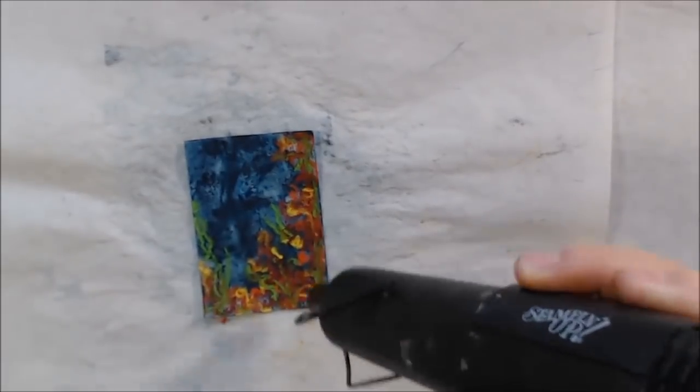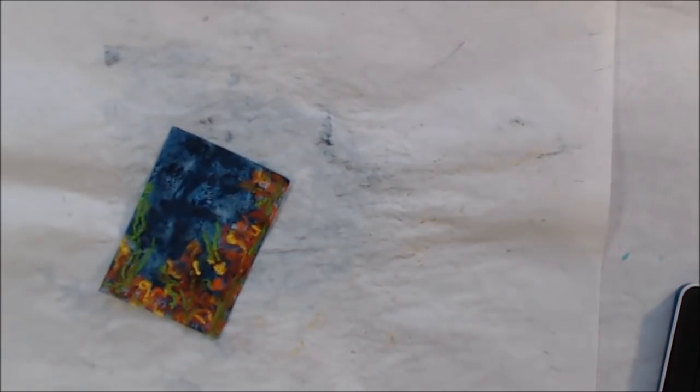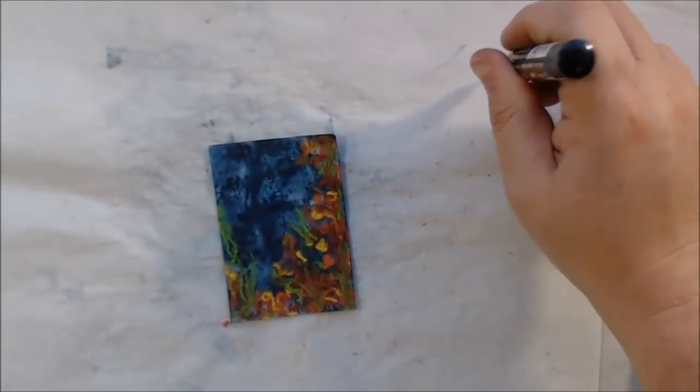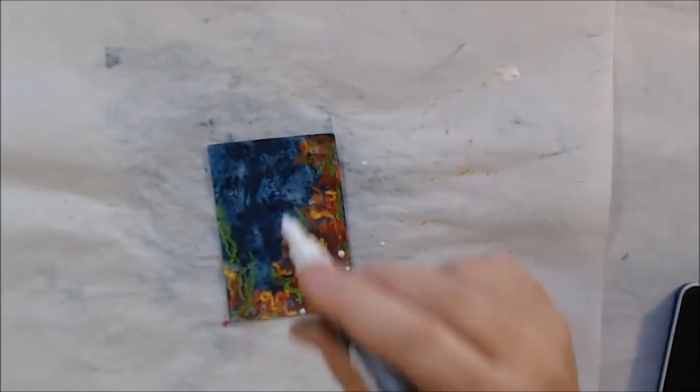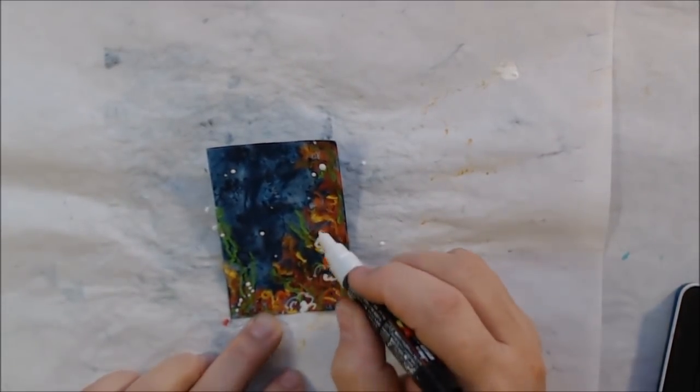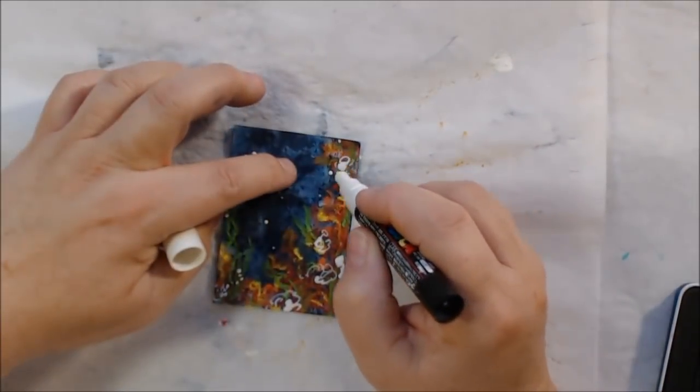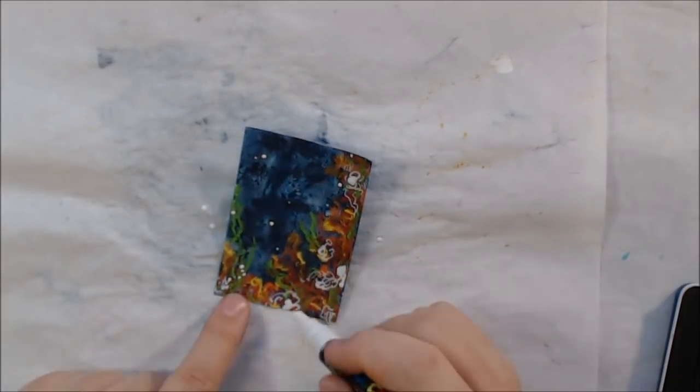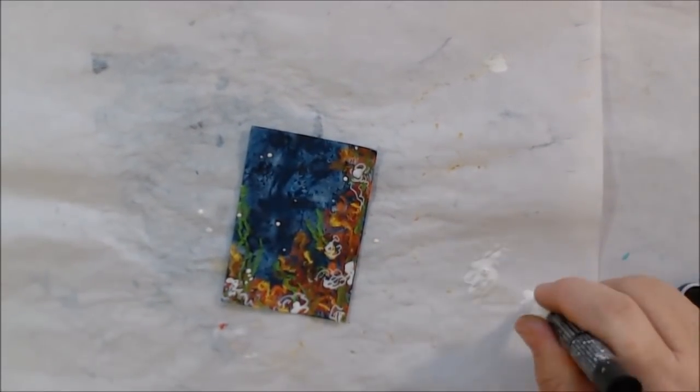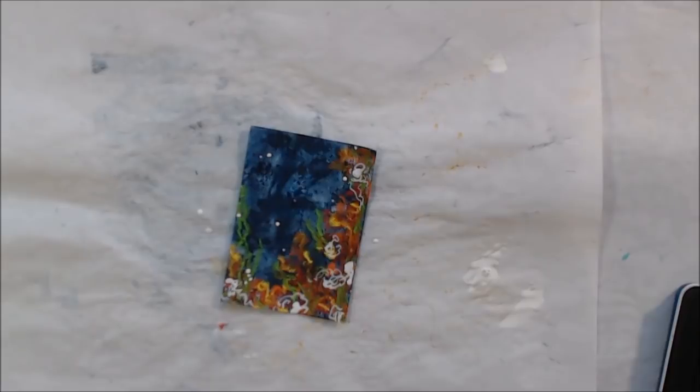I was making an underwater scene, so I drew in some coral using the blocks—the edges of the blocks you can draw with—and then I spritzed it with a little bit of water to activate it and heat set it. Then I'm using a white Posca pen to add in some more details.